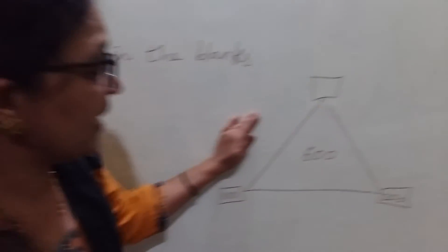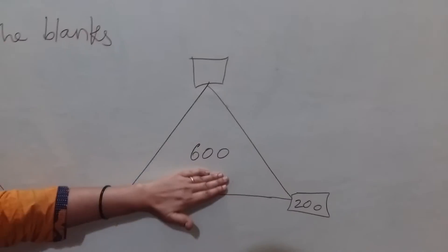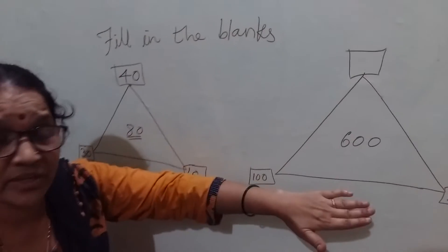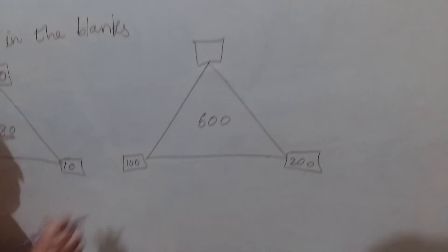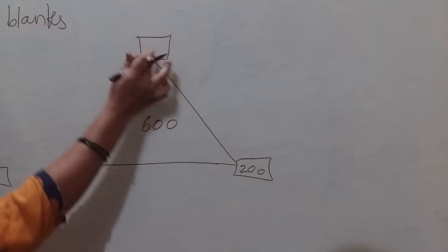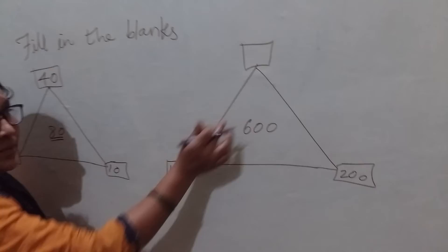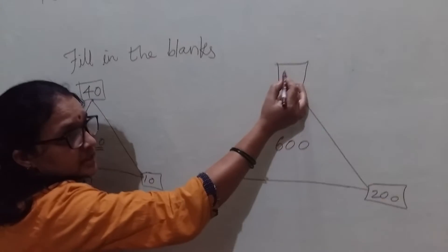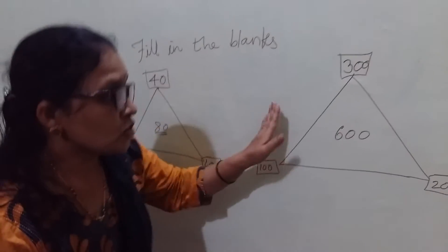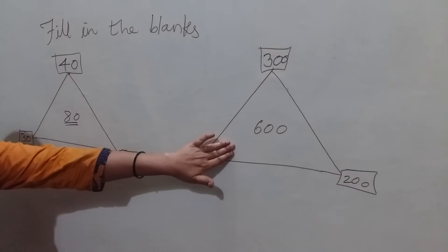Next: 600 is the sum of the three corners. 100 is there at one corner, 200 is at another. 200 plus 100 is 300. So the missing corner is 300, making the total 600.